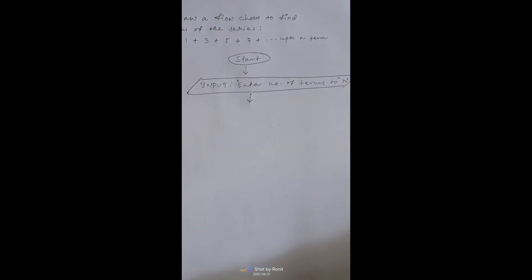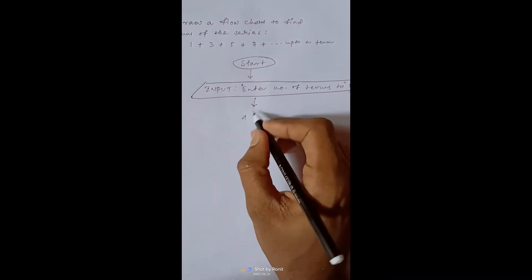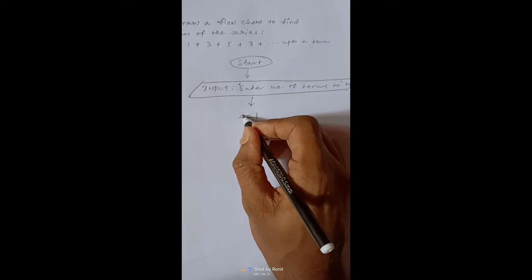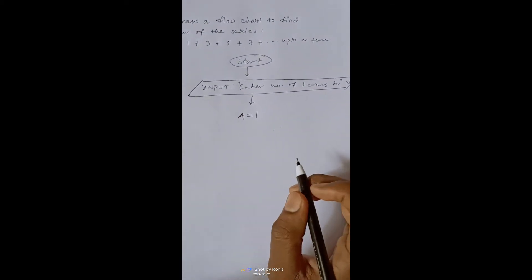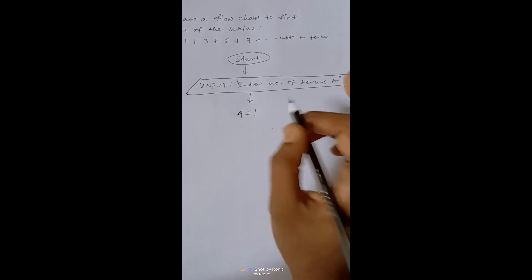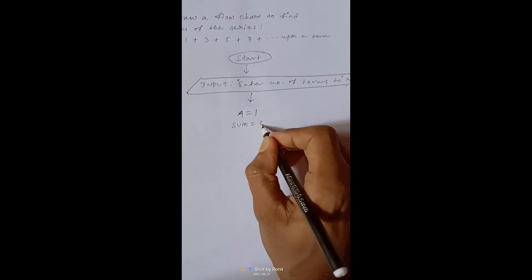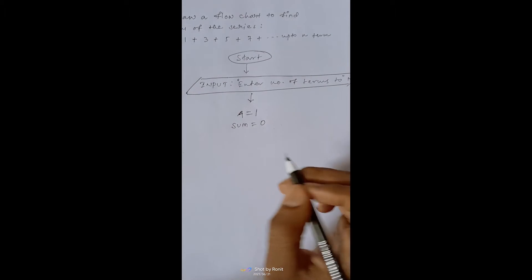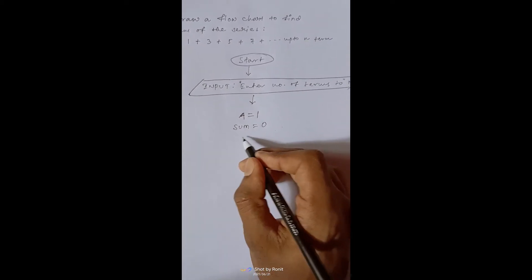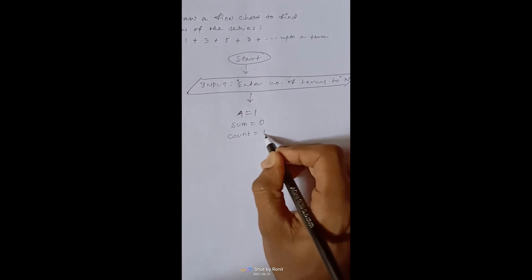Now we will store the first term to a variable say a. Up to this we haven't found the sum. So at current position sum is 0. And we have taken only one term till now. So we take count equals to 1.